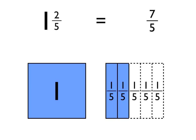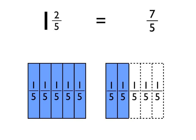Watch what happens to the blue square on the left as I now change the diagram to represent 7 fifths. I've taken that one whole blue square and I've split it into five equal size sections — I've split it into fifths.